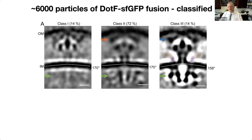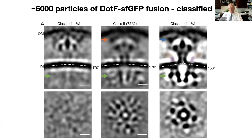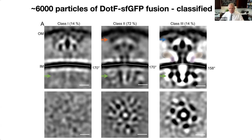That 14% class had a nicely resolved periplasmic complex, but just noise in the cytoplasm - we think the cytoplasmic complex was absent from these particles. Finally, class 3 - another 14% - had a very clearly resolved cytoplasmic complex with the hexamer of dimers that Jun Liu's group had understood. We believe class 3 particles are fully assembled. A cross-section viewed down the symmetry axis clearly shows these class 3 particles were hexameric in the cytoplasm.